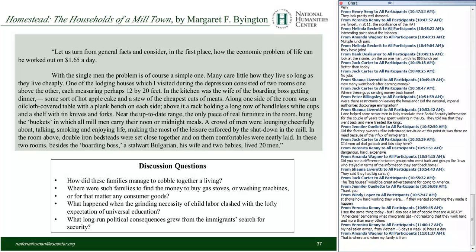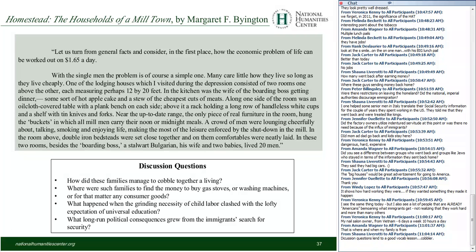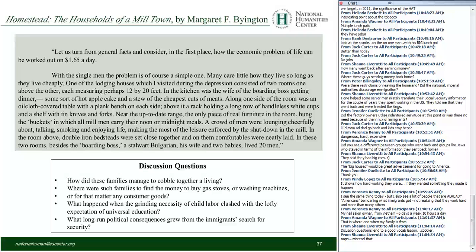'With the single men, the problem is, of course, a simple one. Many care little how they live, so long as they live cheaply. One of the lodging houses I visited during the Depression consisted of two rooms, one above the other, each measuring perhaps twelve by twenty feet. In the kitchen was the wife of the boarding boss getting dinner — hot apple cake and stew of the cheapest cuts of meat. Along one side of the room was an oilcloth-covered table with a plank bench on each side, above it a rack holding a long row of handless white cups and a shelf with tin knives and forks. Near the range hung the buckets in which all mill men carried their noon or midnight meals. A crowd of men were lounging cheerfully about, talking, smoking, and enjoying life. In the room above, double iron bedsteads were set close together. In these two rooms, beside the boarding boss — a star-walled Bulgarian — his wife, two babies, and twenty men lived.'